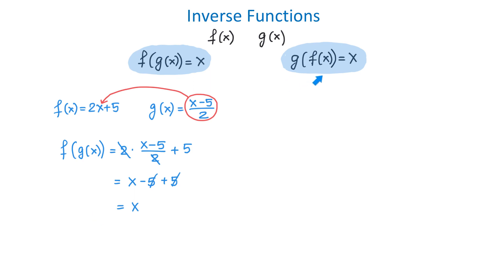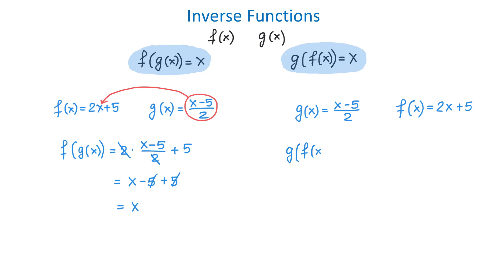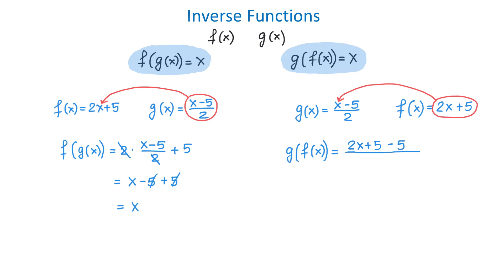Now we also need to show that g of f of x is also equal to x. Let's find the composition of g of f of x. In this case f of x is the input of g, which means that in the g function x will be replaced with 2x plus 5. So we start the fraction and in place of x we write 2x plus 5, then bring down minus 5 and divide by 2. In the numerator, 5 and negative 5 cancel, and 2x divided by 2 equals x. So now we showed that g of f of x is also equal to x.